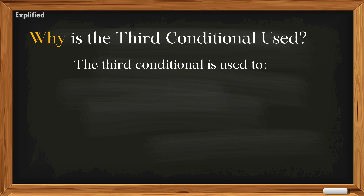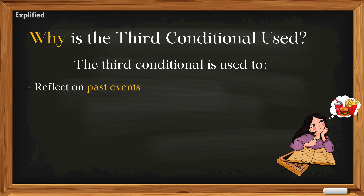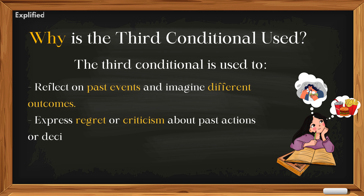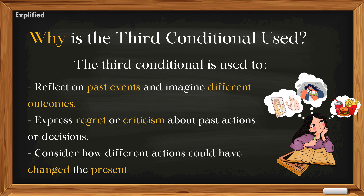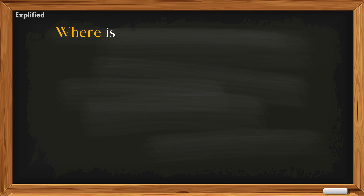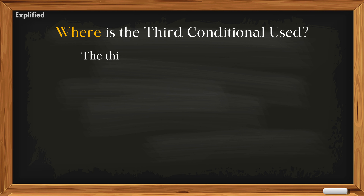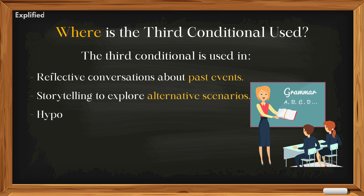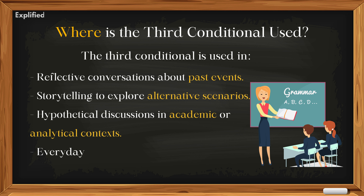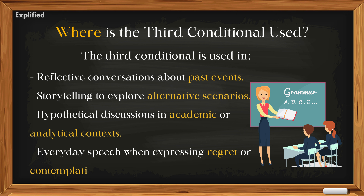The third conditional is used to reflect on past events and imagine different outcomes, express regret or criticism about past actions or decisions, and consider how different actions could have changed the present or future. Where is the third conditional used? It's used in reflective conversations about past events, storytelling to explore alternative scenarios, hypothetical discussions in academic or analytical contexts, and everyday speech when expressing regret or contemplating past decisions.